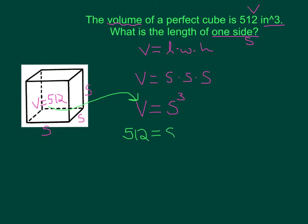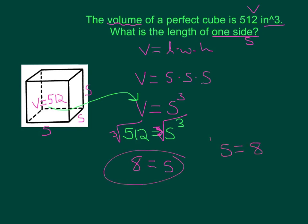When a number is taken to the third power and you get 512, to find what that number is you must undo the cube — instead of a square root, we use a cube root. Cube rooting something cubed leaves you with just the side length. The cube root of 512 is 8, so the length of one side is 8. You can check: 8 times 8 times 8 equals 512.